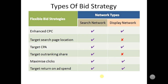If we are talking about Maximize Clicks, it will help us on both networks — Search Network as well as Display Network. And if we are talking about Target Return on Ad Spend, that is the ROAS bidding strategy, it will also help us on both networks: Search Network as well as Display Network.